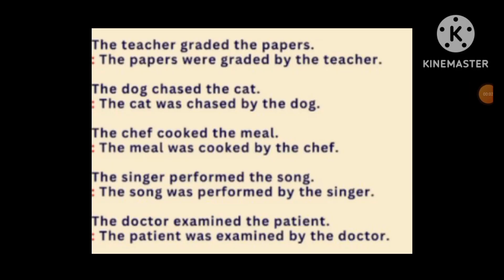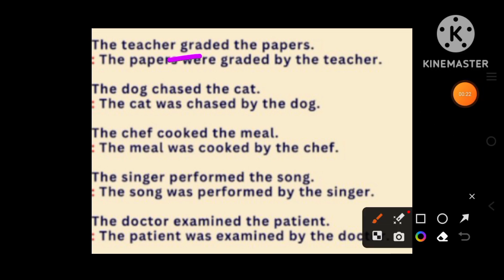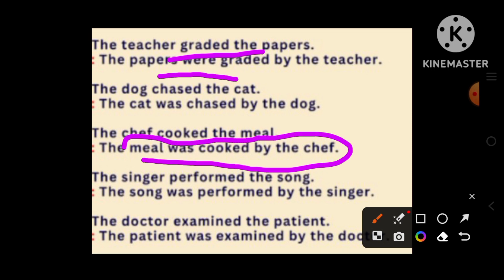Hello friends, welcome to my channel. Look at the sentences I have written here. 'The teacher graded the papers' — then — 'The papers were graded by the teachers.' 'The dog chased the cat' — 'The cat was chased by the dog.' 'The chef cooked the meal' — 'The meal was cooked by the chef.' Can you find any difference between these two sentences?